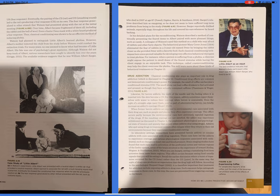In his detailed plans for the reconditioning, Watson described a method of continually presenting the feared items to Albert paired with more pleasant things, such as candy. A colleague of Watson used this method on a child who was afraid of rabbits and other furry objects. The behavioral pioneer, Mary Cover Jones, eliminated the fear of rabbits in a three-year-old named Peter by bringing the rabbit closer as she provided Peter with a favorite food. Such classical conditioning techniques have since proved valuable for developing very effective behavioral therapies to treat phobias. For instance, when a person is suffering from a phobia, a clinician might expose the patient to small doses of a feared stimulus while having the client engage in an enjoyable task. This technique, called counter-conditioning, may help the client overcome the phobia. You'll learn more about these kinds of behavioral treatments in Chapter 15.